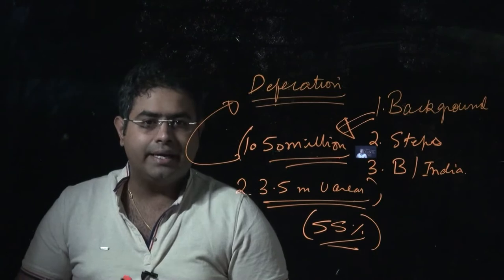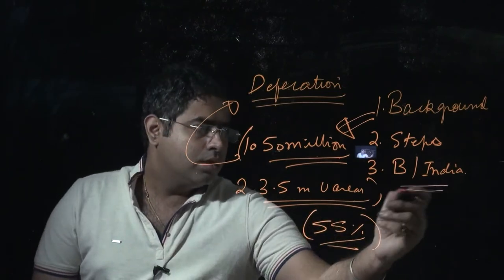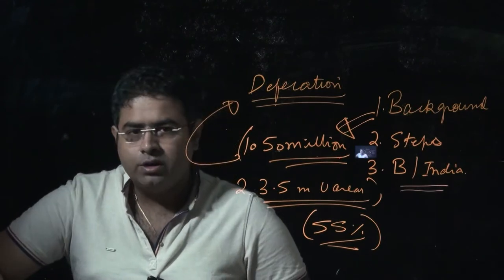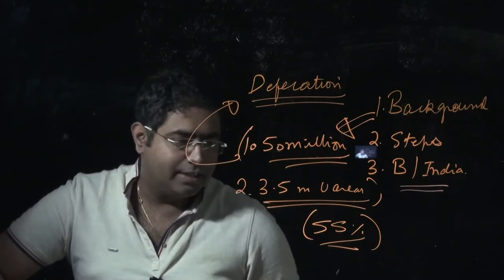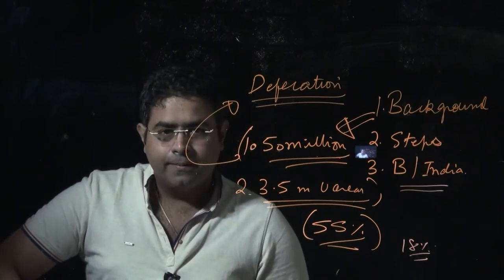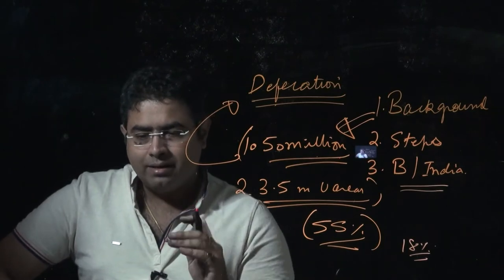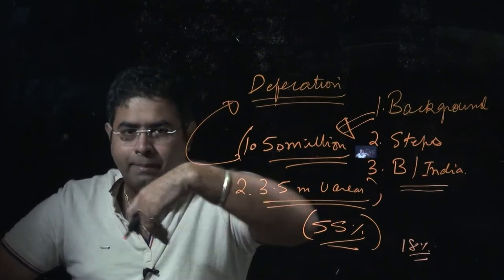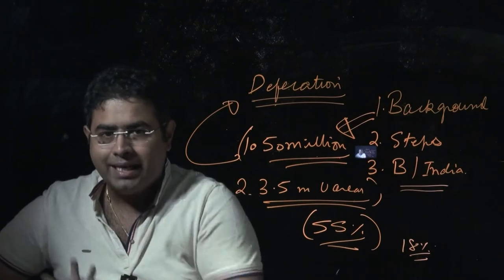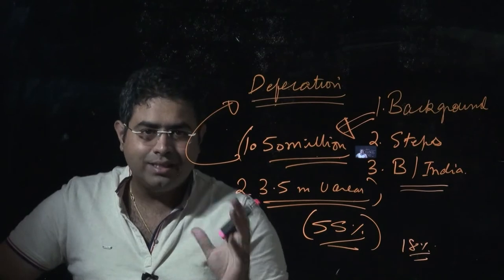In the case of Bangladesh, only 18 percent people defecate in open. Despite Bangladesh being a less developed country in comparison to India with lower per capita income, the open defecation is less.